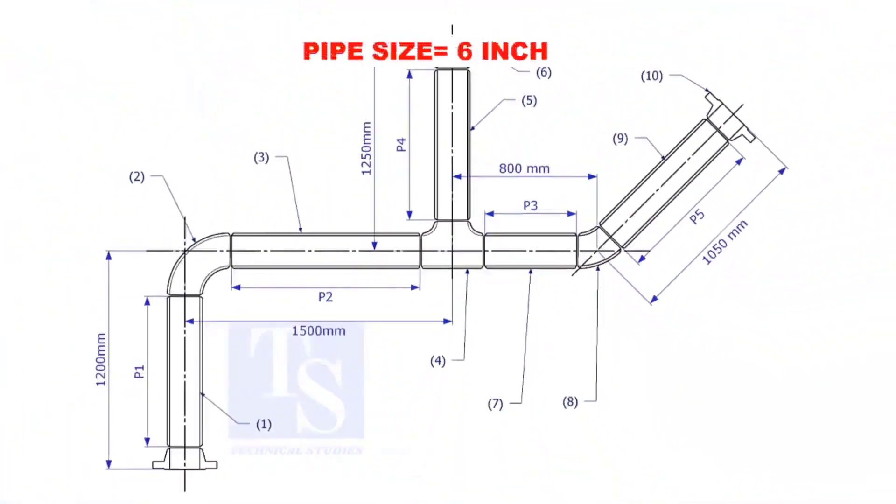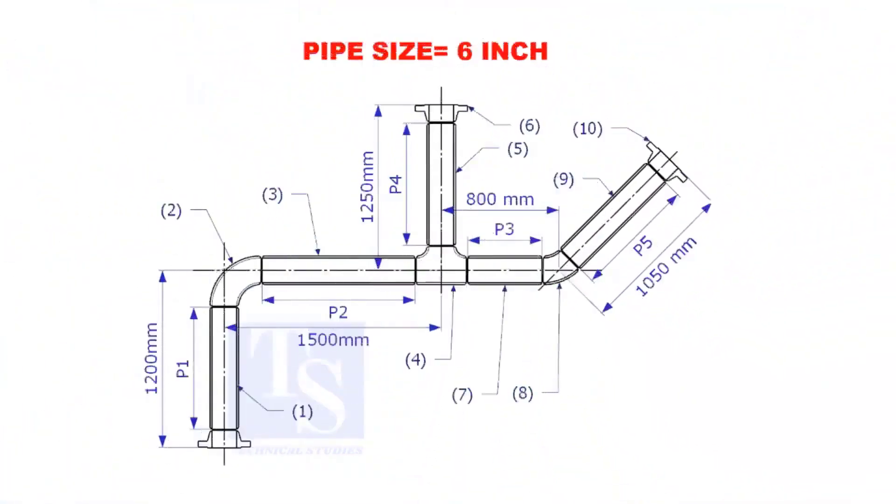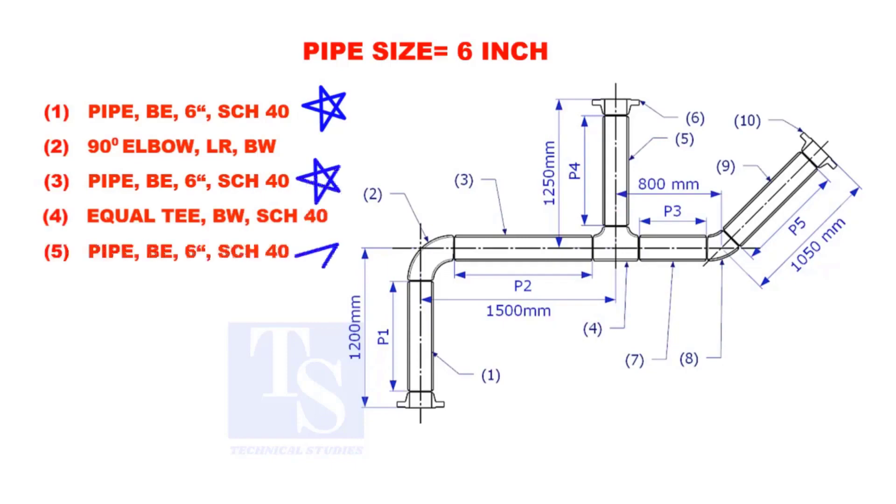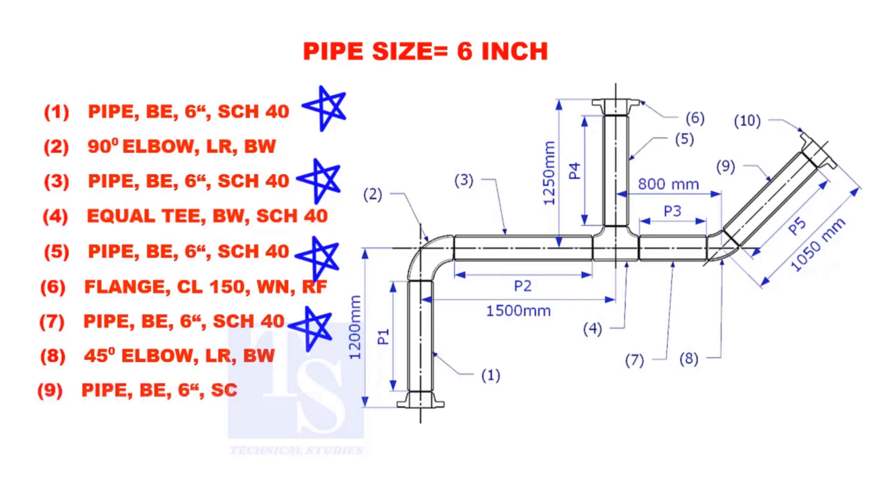Assume that the pipe size is 6 inches. Item numbers 1, 3, 5, 7, and 9 are pipes.